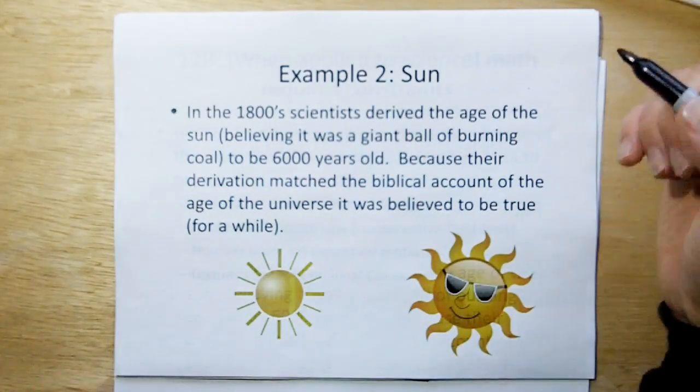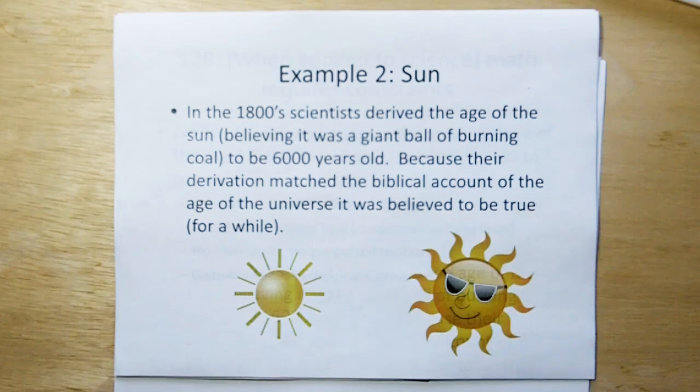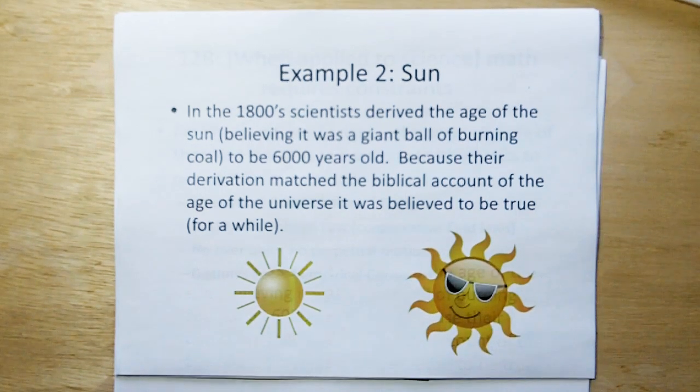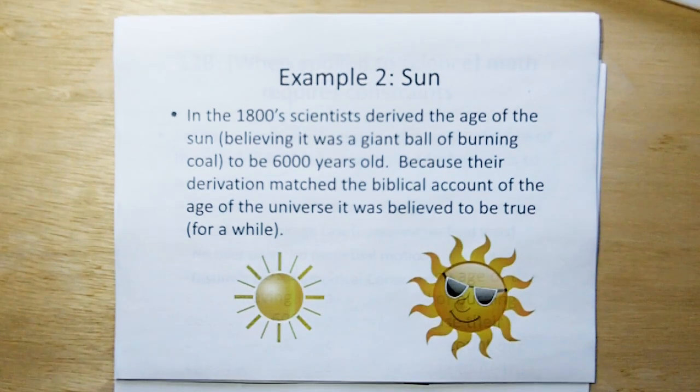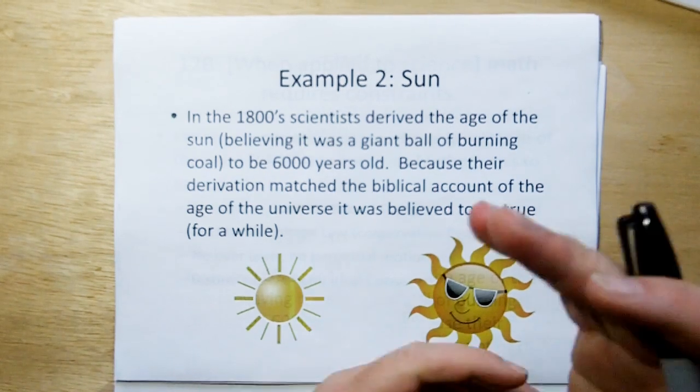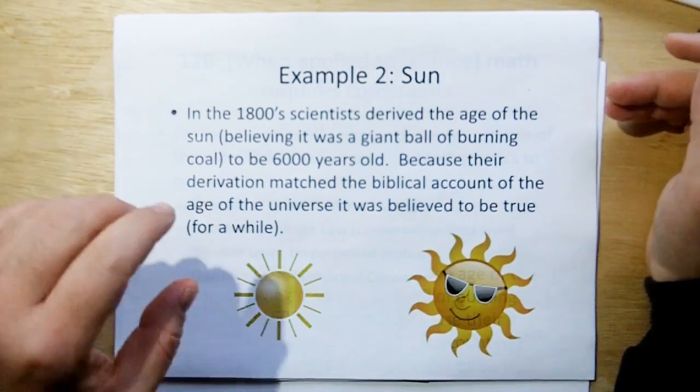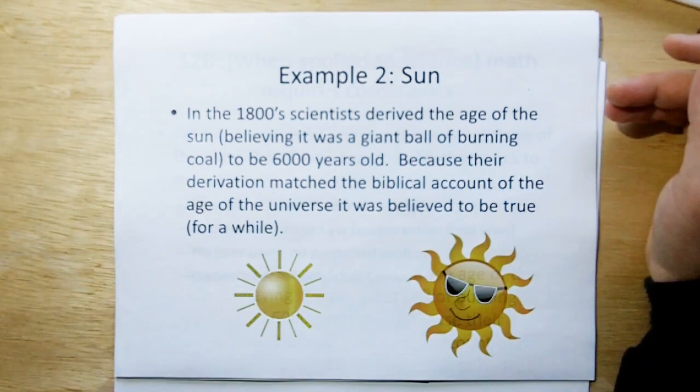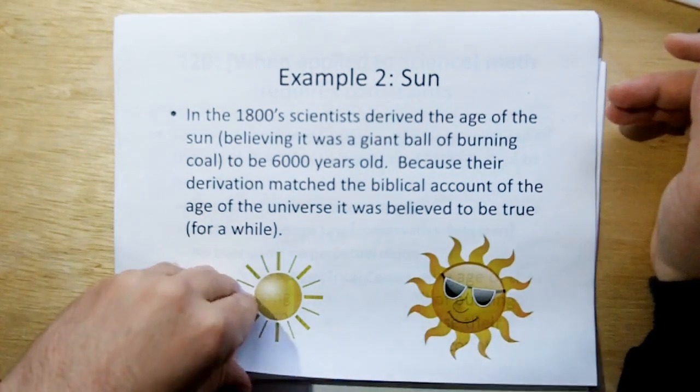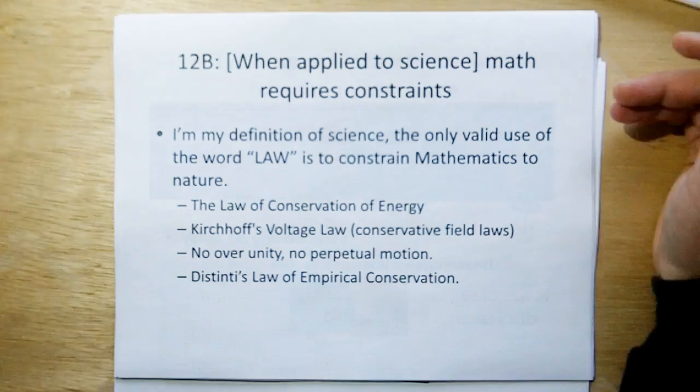Here's an example. Number two. In the 1800s, scientists derived the age of the sun, believing it was a giant ball of burning coal. And they derived that age of the sun to be about 6,000 years old. And because their derivation matched the biblical account of the age of the universe, it was believed to be true, at least for a while, until people started wondering, where's all the smoke? The earth should have passed through a plume of smoke somewhere, depending on which way the wind in the universe is blowing.